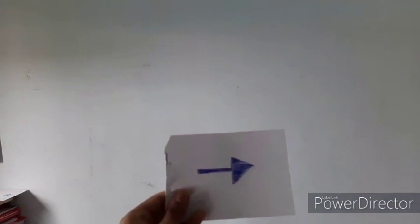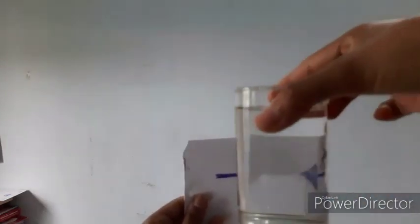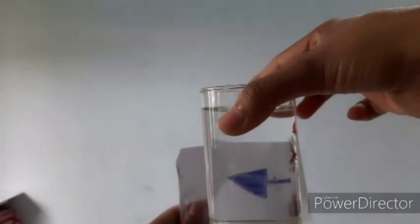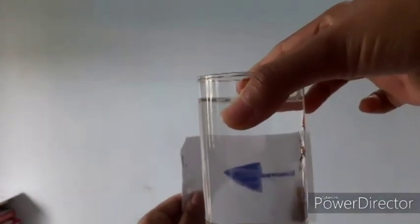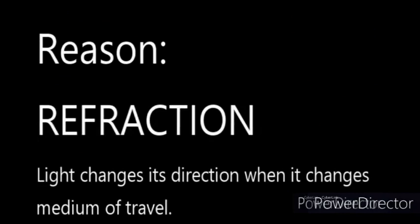Now I've got a glass of water and an arrow drawn on a piece of paper. Let's see what happens when I place it behind the glass. Ta-da! The arrowhead reversed. The arrowhead is reversing when we see it through the water. Isn't it amazing? The reason behind this is refraction of light.